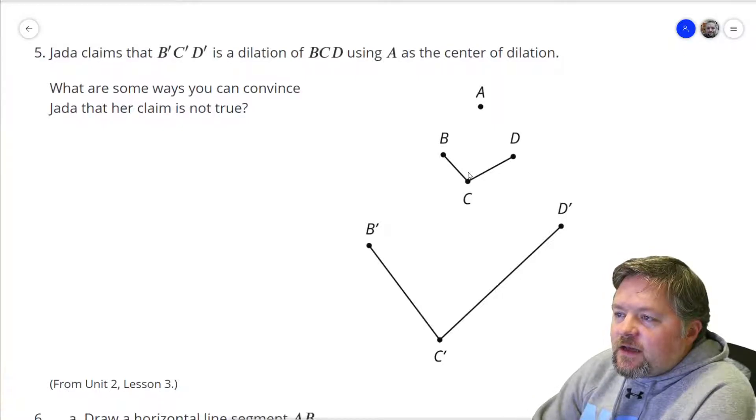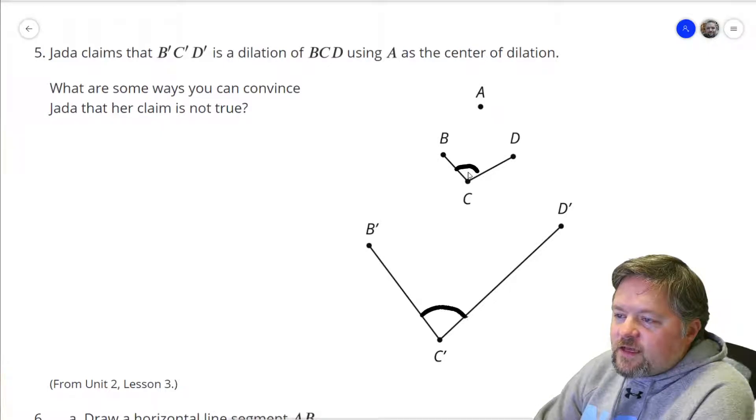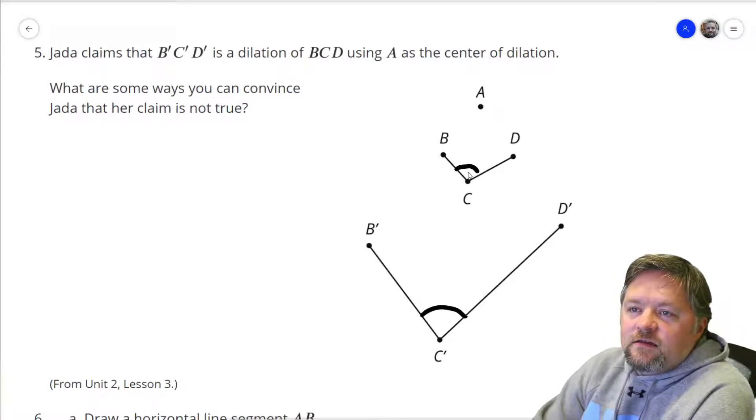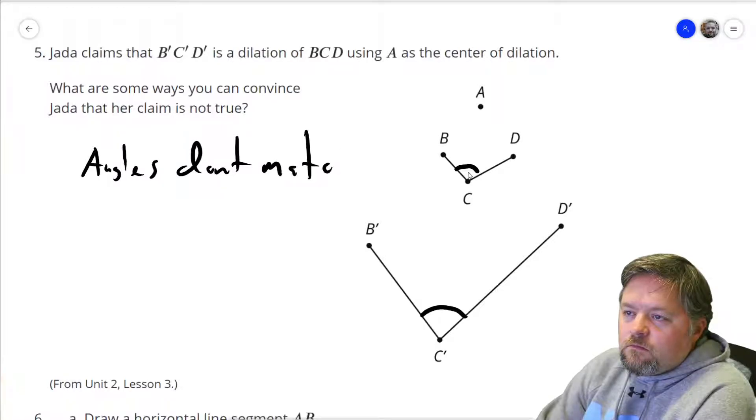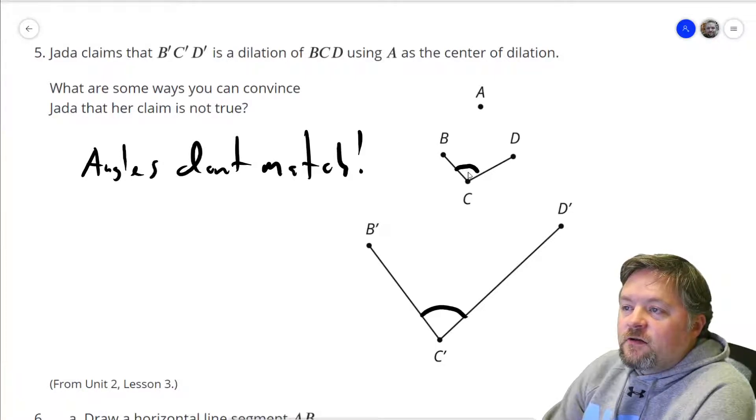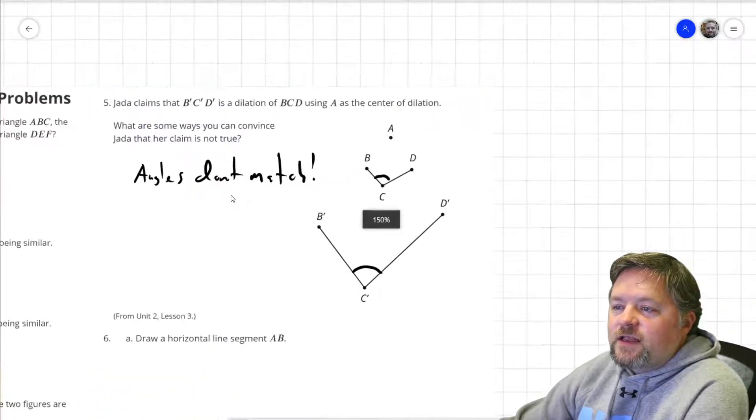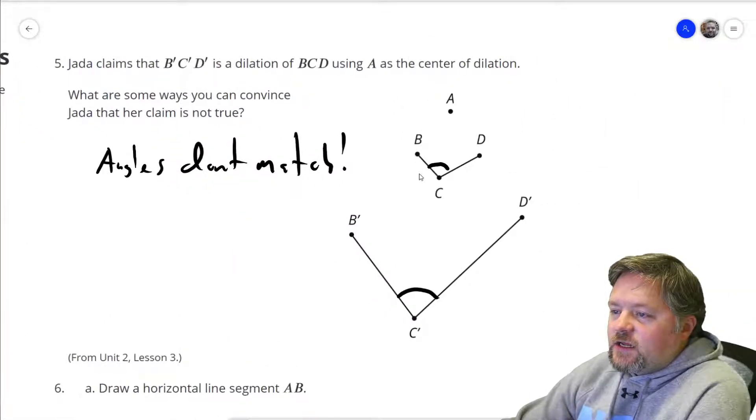Well, it looks to me like this is an obtuse angle. That's just a little bit more than 90. And this is an acute angle, which is a little bit less than 90. The angles don't match. You could also check for a consistent scale factor. Either for the length from AB versus AB', or you could check for the scale factor from BC to B'C', and the scale factor from CD to C'D'. There are a few different ways you can look at that one. The easiest one is those two angles don't match.